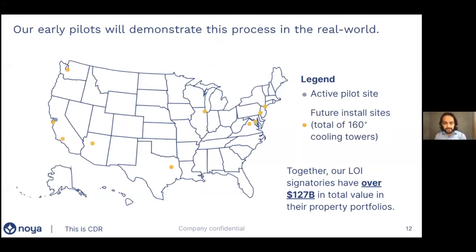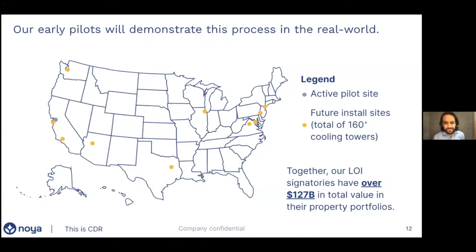We have an active pilot site for the first version of our process operating in the East San Francisco Bay. We have about 160 total buildings signed on to our waitlist across about 15 U.S. cities. Together our early LOI signatories have a lot of value tied up in their properties — these are huge multi-billion dollar companies that are excited about the process we're offering to them.